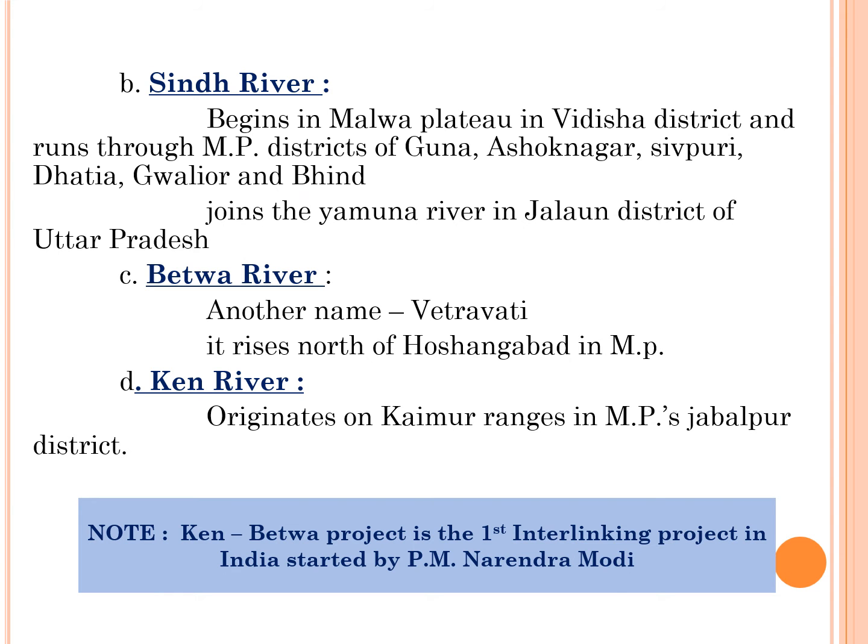The next tributary of Yamuna river is Sindh river. It begins on the Malwa Plateau in Vidisha district and runs through Madhya Pradesh districts of Guna, Ashoknagar, Shivpuri, Datia, Gwalior, and Bhind. This Sindh river joins Yamuna river in Jalaun district of Uttar Pradesh state.